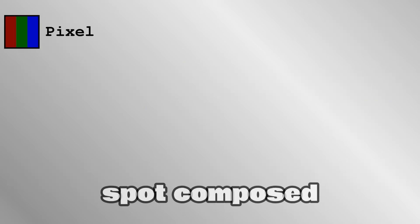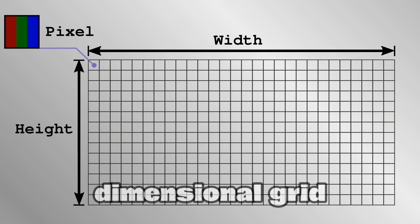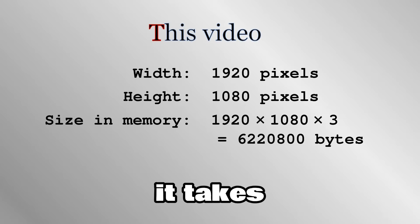A little spot composed of three colours like this, no matter what technology is used, is called a pixel. A display has pixels arranged in rows and columns to form a two-dimensional grid. For example, this video at maximum resolution is 1920 pixels in width by 1080 pixels in height. The number of bytes it takes to fill a display in memory is 3 times the width times the height.